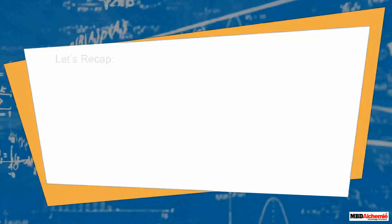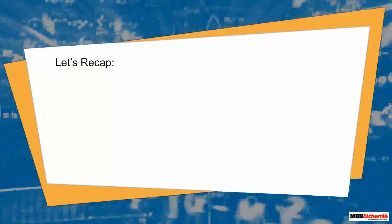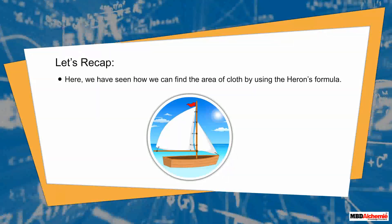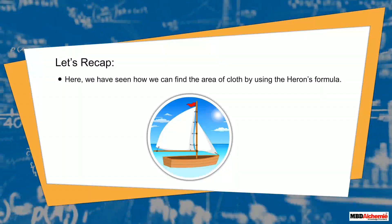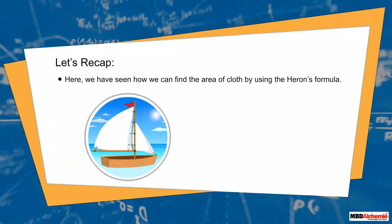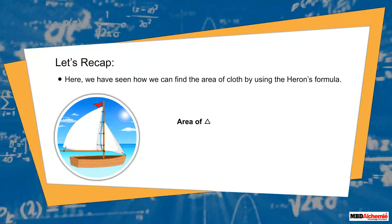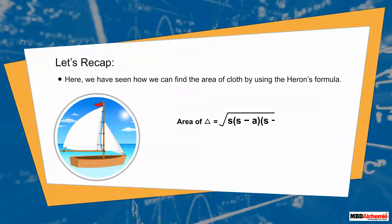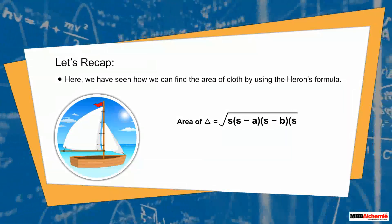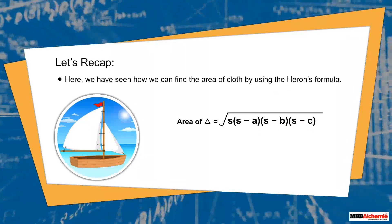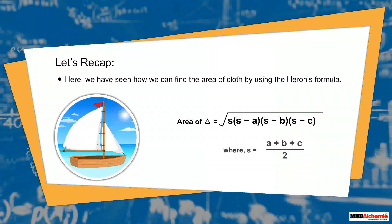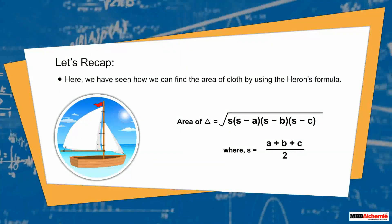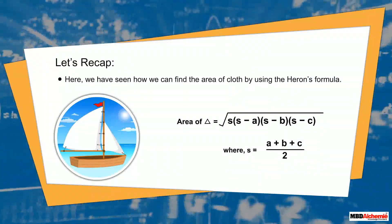Let's recap. Here we have seen how we can find the area of cloth by using Heron's formula, that is: area of triangle equals the square root of s × (s − a) × (s − b) × (s − c), where s is the semi-perimeter of the triangle.